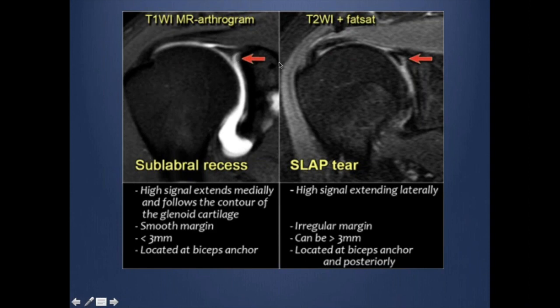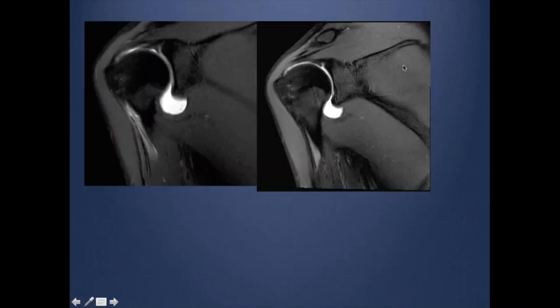The sub-labral recess is less than 3 mm, while the tear is more than 3 mm. The recess is located at the biceps anchor, while the tear is posterior to the biceps anchor. Looking at this example, there is abnormal signal with extension of contrast that goes medially, has a smooth outline and is less than 3 mm. So is this a tear or a sub-labral recess?